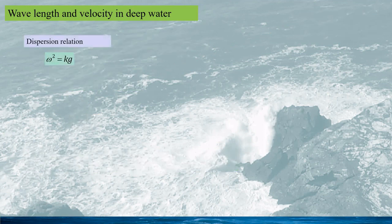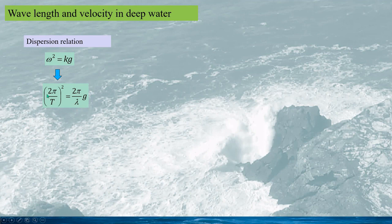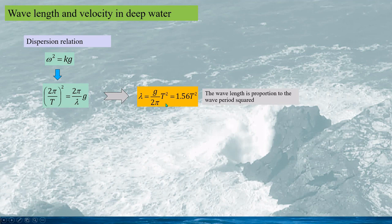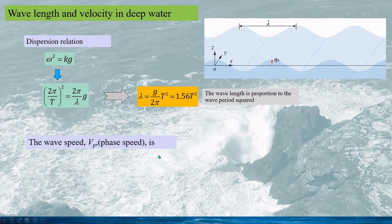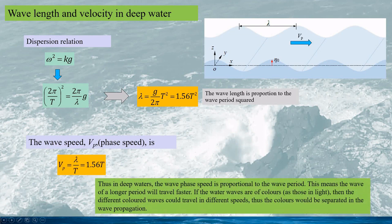Using the dispersion relation in deep water, we can obtain the relation between wavelength and wave period. Replacing omega with the wave period T and replacing the wave number with the wavelength, we derive the wavelength calculation formula. It can be seen that in deep water, the wavelength is proportional to the wave period squared. From the wavelength and wave period, we can easily calculate the wave phase speed Vp, which is proportional to the wave period, meaning longer waves travel faster.